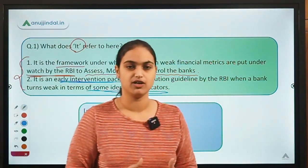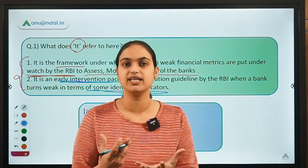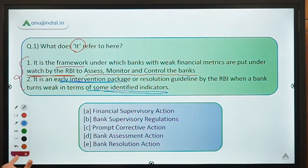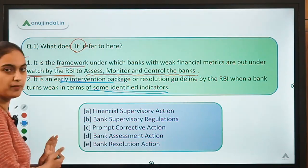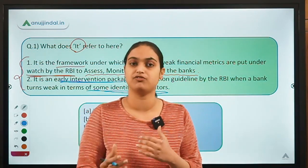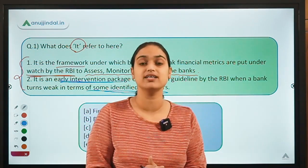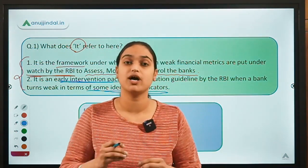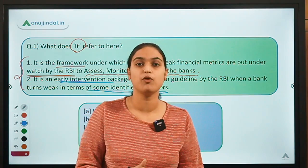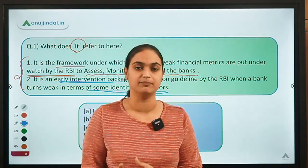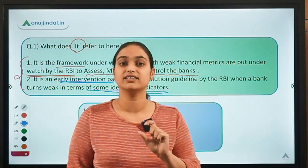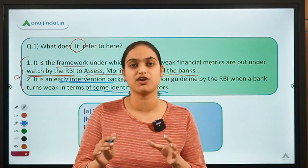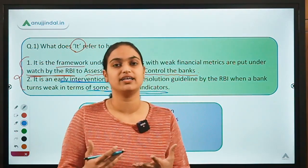Let's discuss this framework. They are talking about a framework where RBI is regulating banks and providing guidelines to ensure banks are functioning properly. With this framework, RBI is able to control the functioning of banks by specifying certain parameters. Banks play a very important role in society, so it's important they continue to function in a healthy manner. RBI specifies certain indicators and ratios which these banks need to maintain. If banks are not able to maintain those ratios within prescribed limits, then RBI will intervene and take control.